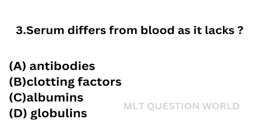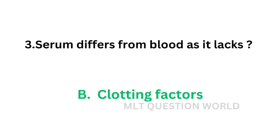Question number 3: Serum differs from blood as it lacks. Option A: Antibodies. Option B: Clotting factors. Option C: Albumins. Option D: Globulins. Serum is a liquid that remains after the blood has clotted. Blood clot is formed by the conversion of fibrinogen to fibrin, so serum lacks coagulation factors, mainly fibrinogen. The correct answer is option B: Clotting factors.